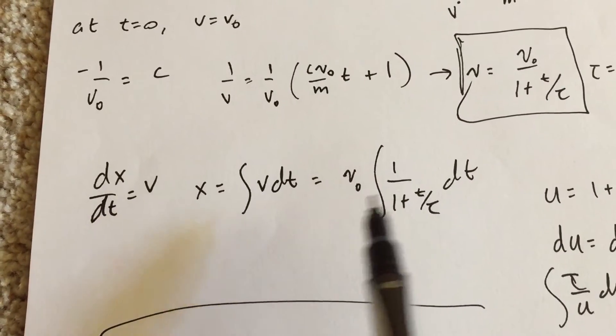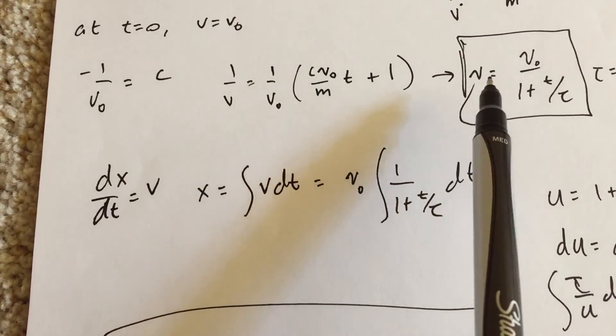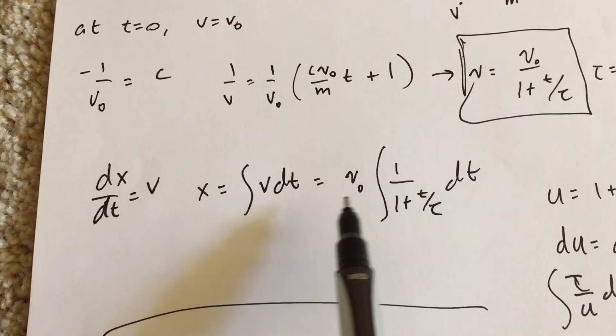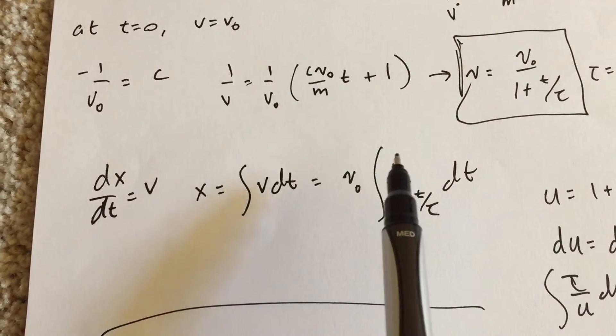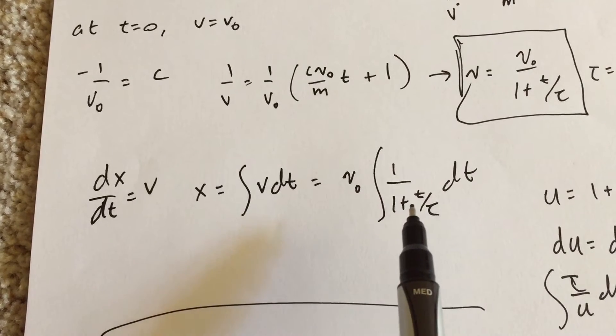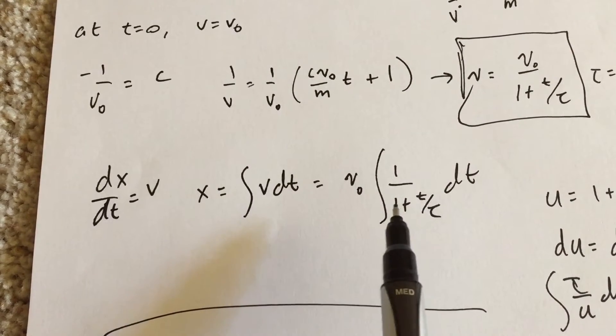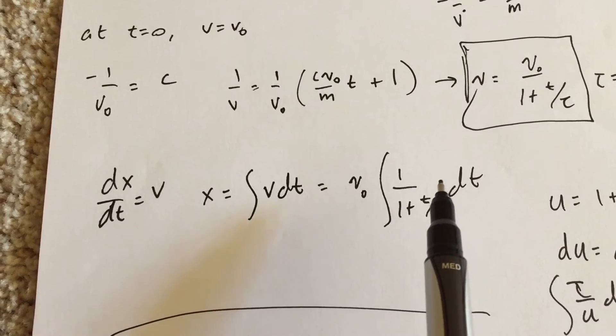Okay, so if I put in my function v, right here, I get the v₀ is a constant, it comes out, I get 1 over t, 1 plus, 1 over 1 plus t over tau dt. Now, this looks tough to integrate, but it's not.